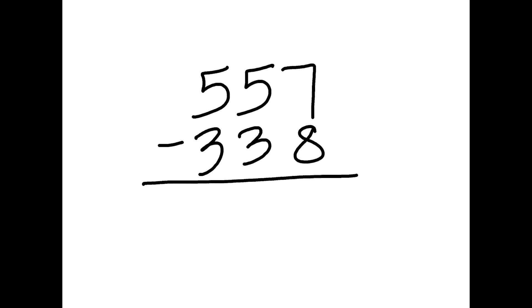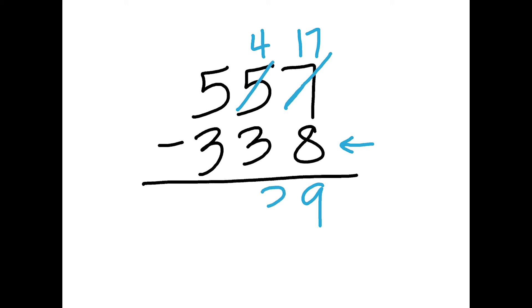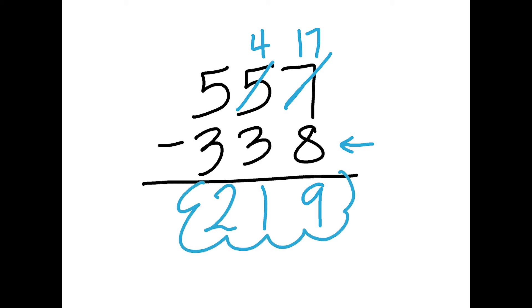Let's see if you got it correct. Starting in the ones column on the right, we have 7 take away 8. Right away I see that I have more on the floor than I do on top, so I need to go next door and borrow a 10 from the 5, which becomes 4. My 7 becomes 17. 17 take away 8 equals 9. Then I go to my tens: 4 take away 3 — I have less on the floor this time, so I don't have to borrow. 4 take away 3 is 1. Then hundreds: 5 take away 3 is 2. Your answer should have been 219.